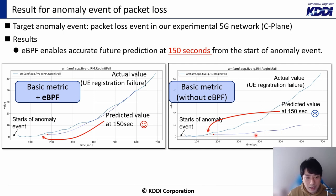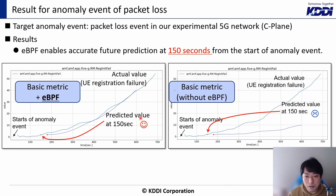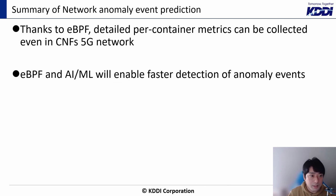The upper line shows the actual value and the lower dashed line shows the predicted value by LSTM. There is a large estimation error without eBPF. Although these results were obtained in our test environment and not yet evaluated in actual commercial networks, it is expected that eBPF will enable rapid and accurate detection of anomaly events in 5G networks. Thanks to eBPF, detailed per-container metrics can be collected even in CNF's 5G network, and our evaluation shows eBPF and AI/ML will enable faster detection of future network anomaly events.